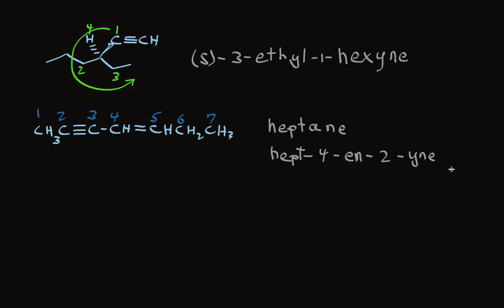If we had one less carbon, the situation is slightly different. Now we can number from either end and get to a functional group with number 2. In a case like this, where there's a tie, we number from the end that's closest to the alkene. There are six carbons in the longest chain, so this would be hexane if it were an alkane. And we need to change the -ane of hexane to indicate that it's an -en-yn. Again, the -yn is at the end of the name, regardless of the numbering. And then we'll put the numbers in. This structure is hex-2-en-4-yne.